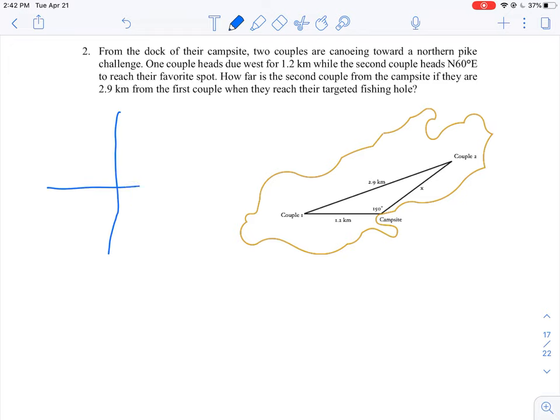So a compass is just going to be an x and y grid, but instead of using x and y as the axes, we're going to label them north, south, west, and east. It says here one of the groups is heading out due west for 1.2 kilometers. So I'm just going to darken in and put in a little line here. We call this a vector and they've headed out for 1.2.